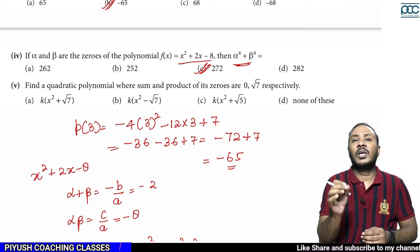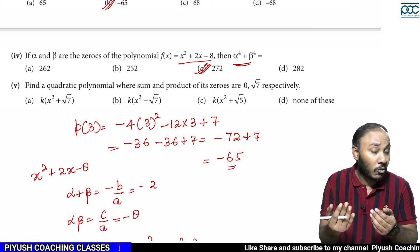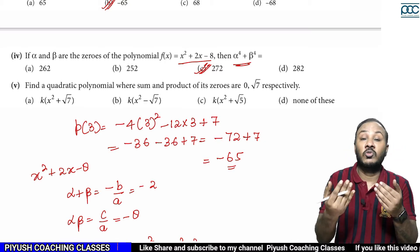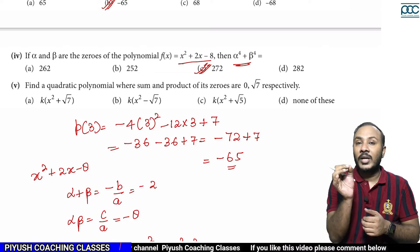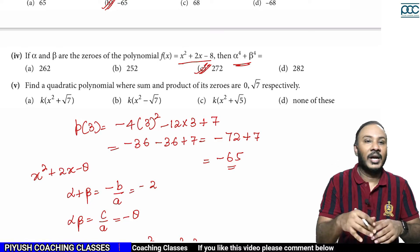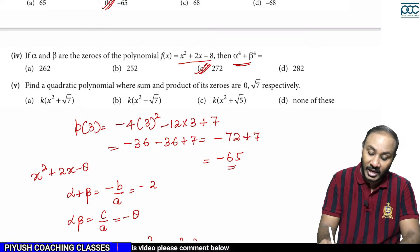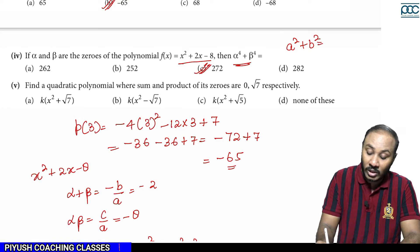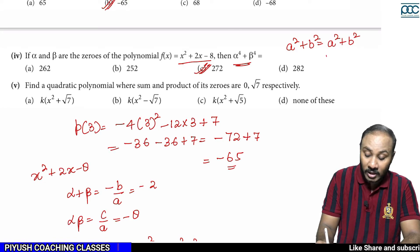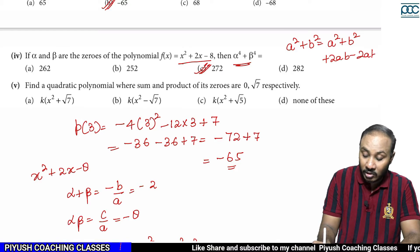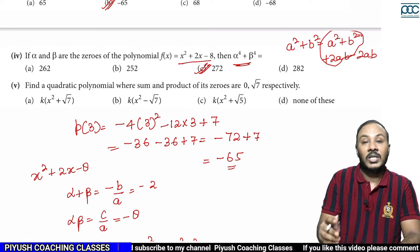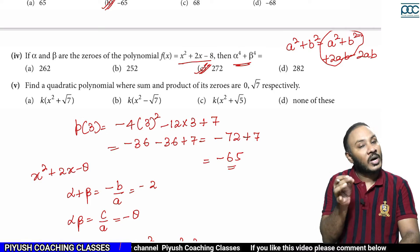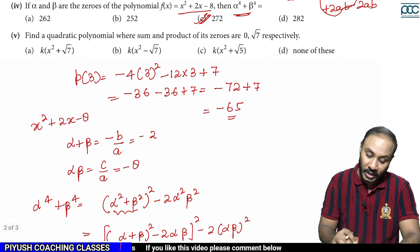So for alpha⁴ + beta⁴, we tried to express it in terms of (a+b)² form by adding and subtracting 2ab. That gives us (α² + β²)² = (α + β)² whole square minus 2αβ, which simplifies nicely. We verified: a² + b² = (a+b)² − 2ab.